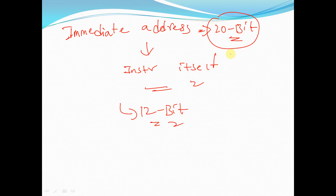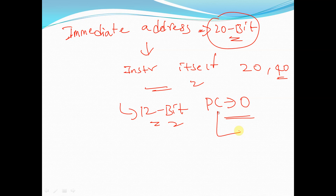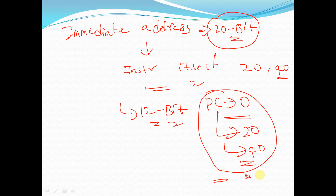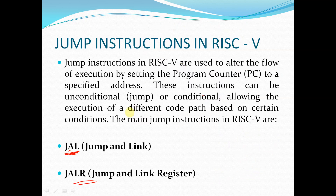The user provides the address to which the program counter should be shifted. For example, if the program counter is at address 0 and the jump instruction specifies an address like 20 or 40, the program counter will jump to that specific address provided in the instruction.